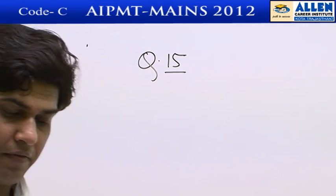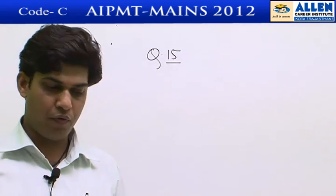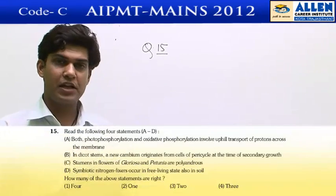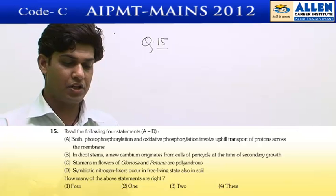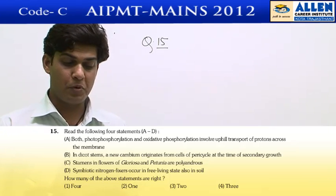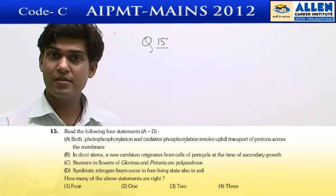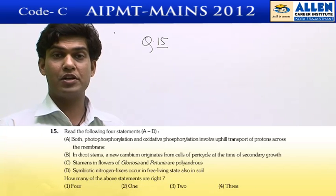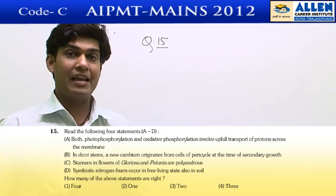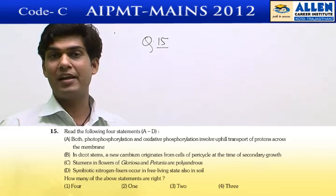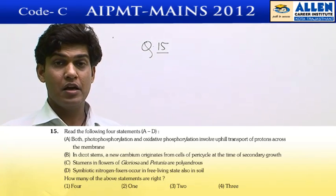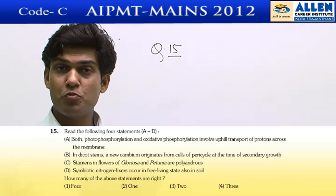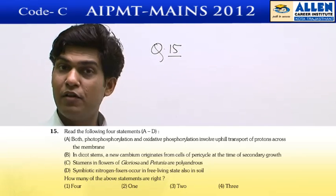In question number 15, four statements are offered. Statement number 1: both photophosphorylation and oxidative phosphorylation involve uphill transport of the proton across the membrane. This is correct, because both are types of electron transport chain-mediated ATP generation, where pumping of the proton across the membrane requires investment of energy — meaning it is an uphill phenomenon.